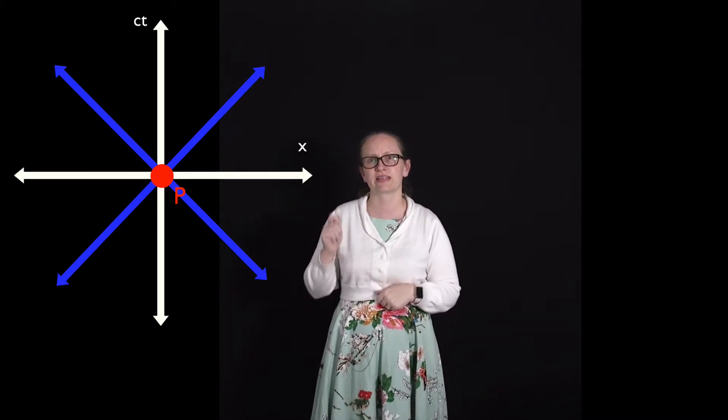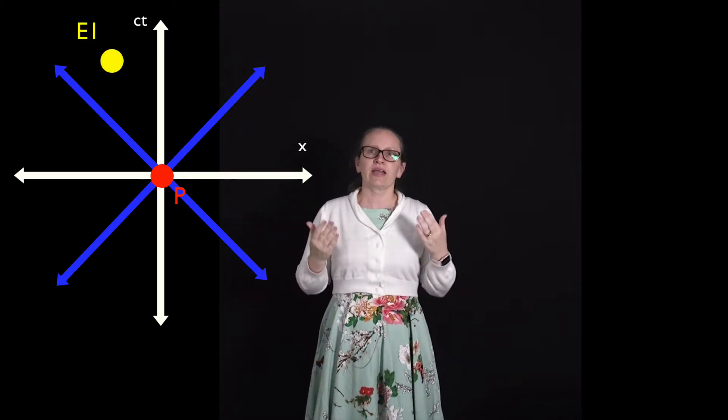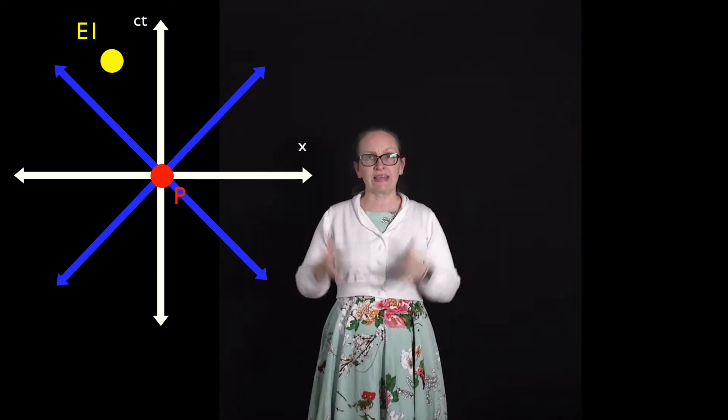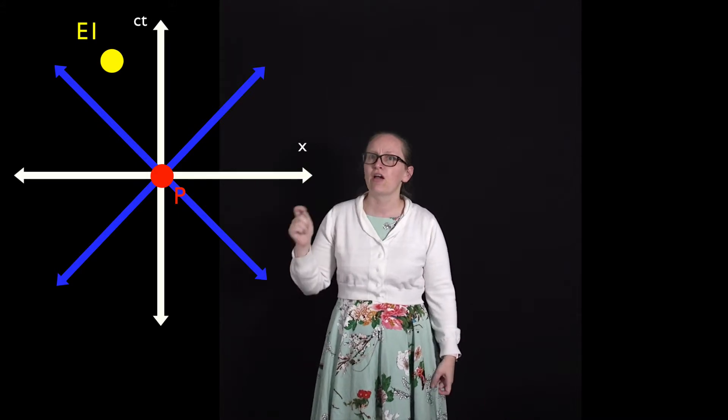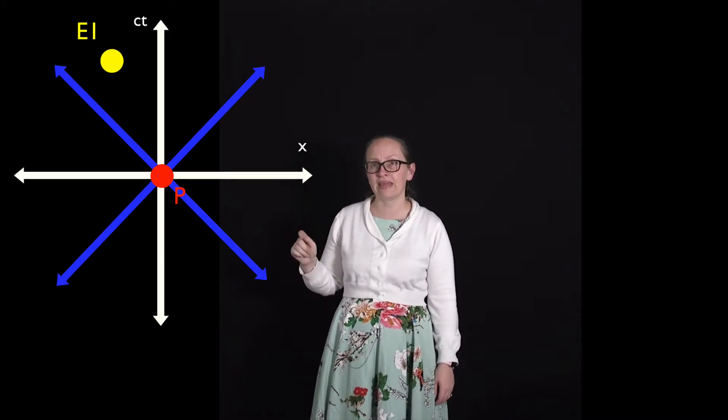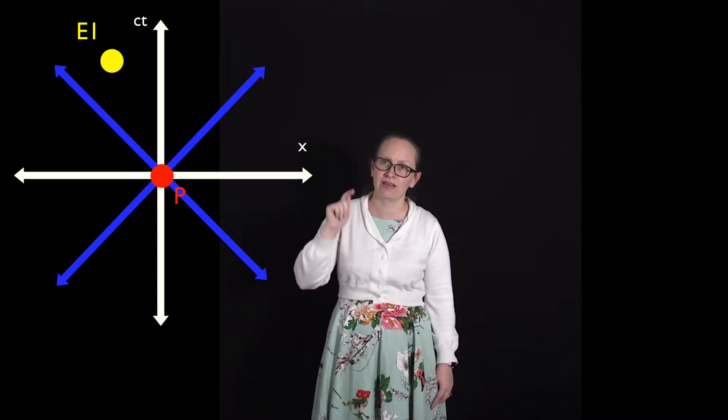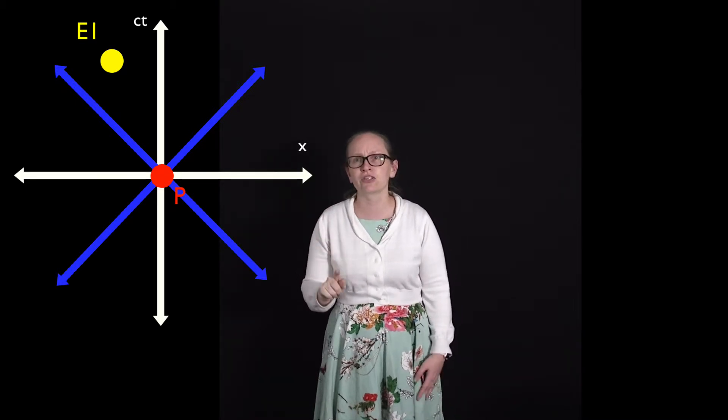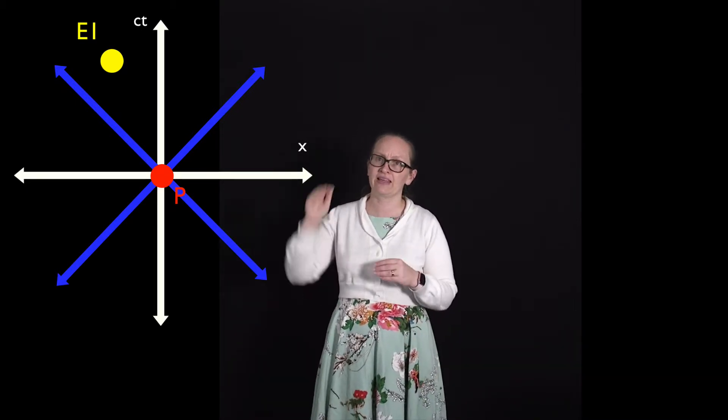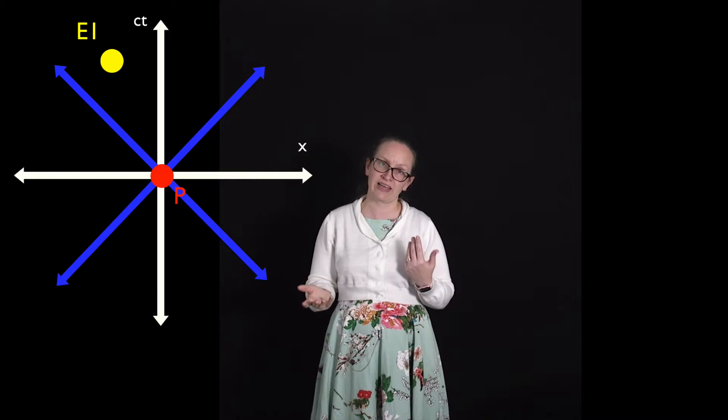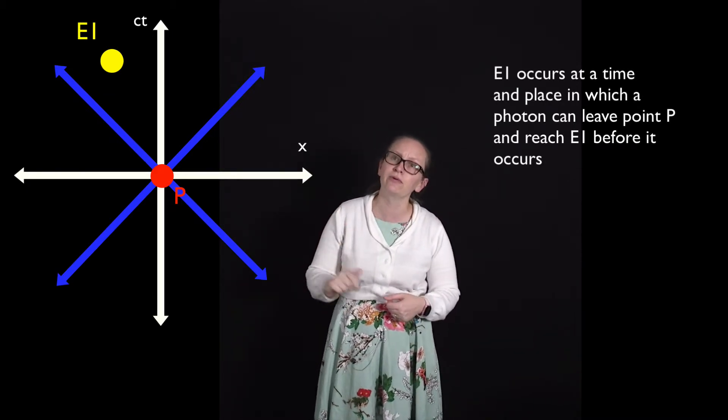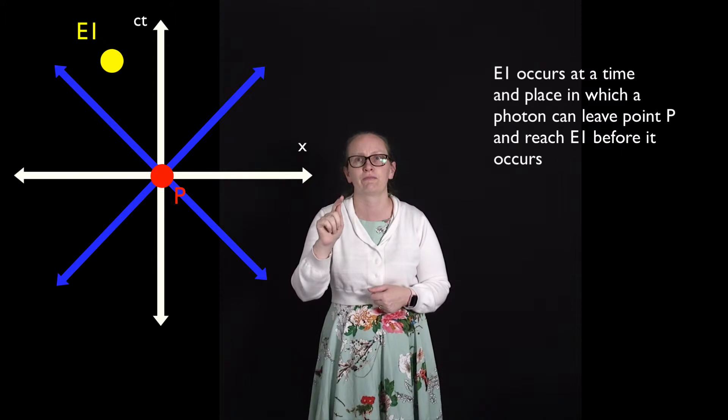Let's consider two events. Let's start with event 1, which is shown here. Event 1 is within the light cone of point P. What that means is that there has been time for the light from P to reach event 1. So it is possible for P and event 1 to be causally related. What we mean there is it is possible that P caused event 1.